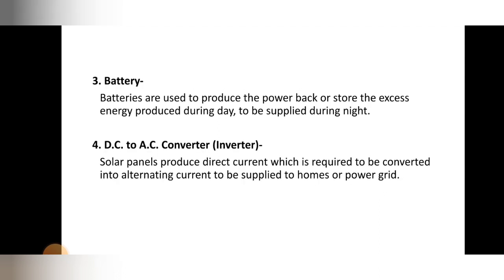The third main component is the battery. The solar panel extracts sunlight from photons and converts it into electrical energy, but that generated energy is DC — we can't directly transfer it to household applications. So first we have to store that energy, and to store that DC energy we require a battery. Batteries store the excess energy produced during the day to be supplied during the night time when no sunlight is available.